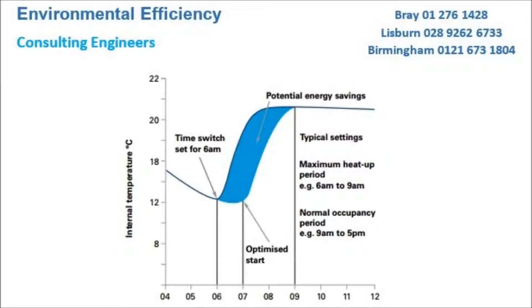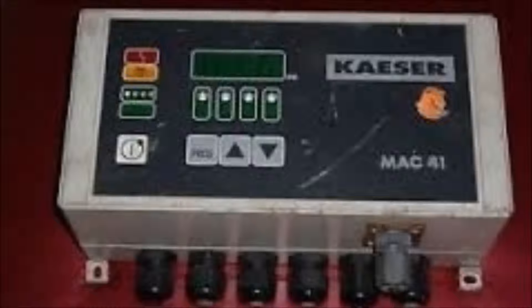Significant savings, perhaps up to 10% of the heating bills, could be made using these controllers. A good example of improved controls in industrial applications is the improved sequencing of air compressors. The traditional method of bringing additional air compressors online by pressure differential is extremely wasteful.